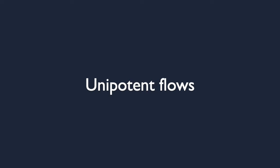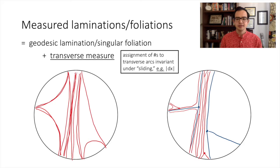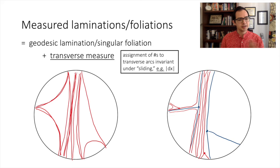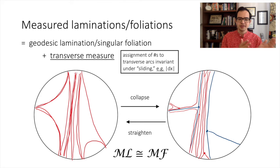Let's take a step back and review some relevant definitions. The first objects I should mention are measured laminations and foliations. A measured lamination is a geodesic lamination — a closed union of simple geodesics — together with a transverse measure on transverse arcs which is invariant under transverse isotopy. Closely related are measured foliations: singular foliations of your surface, up to equivalence, equipped with a transverse measure defined analogously. These two spaces are naturally isomorphic — you map laminations to foliations by collapsing the complementary regions, and foliations to laminations by straightening the leaves. This takes transverse measures to transverse measures, so a measured lamination is essentially the same thing as a measured foliation. We'll interchange between these two concepts freely throughout the rest of the talk.